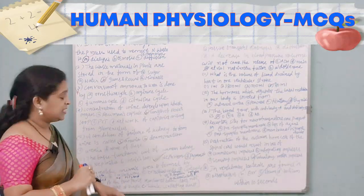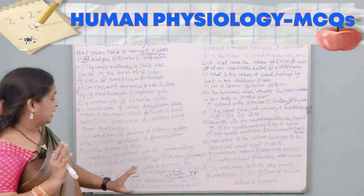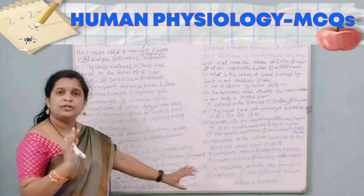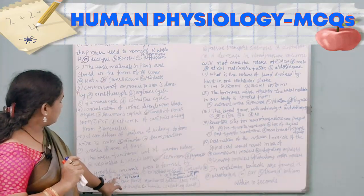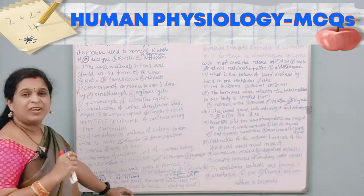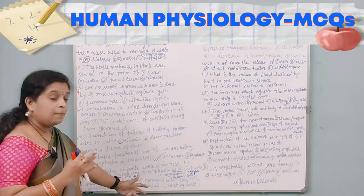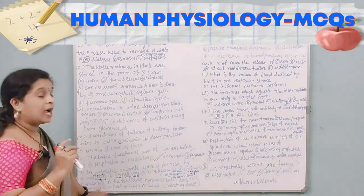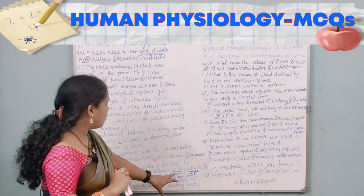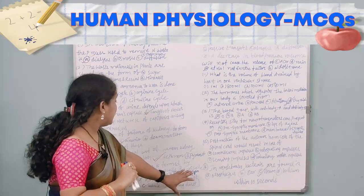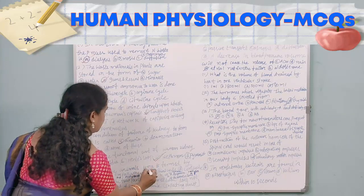The seventh question: in ureotelic animals, urea is formed by — Krebs cycle, EMP pathway, ornithine cycle, or Cori cycle? Cori cycle produces lactate after anaerobic glycolysis. The EMP pathway (Embden–Meyerhof–Parnas pathway) produces ATP and NADH. Krebs cycle produces carbon dioxide and water. The ornithine cycle removes carbon dioxide and ammonia in the liver to form urea, so the answer is ornithine cycle.